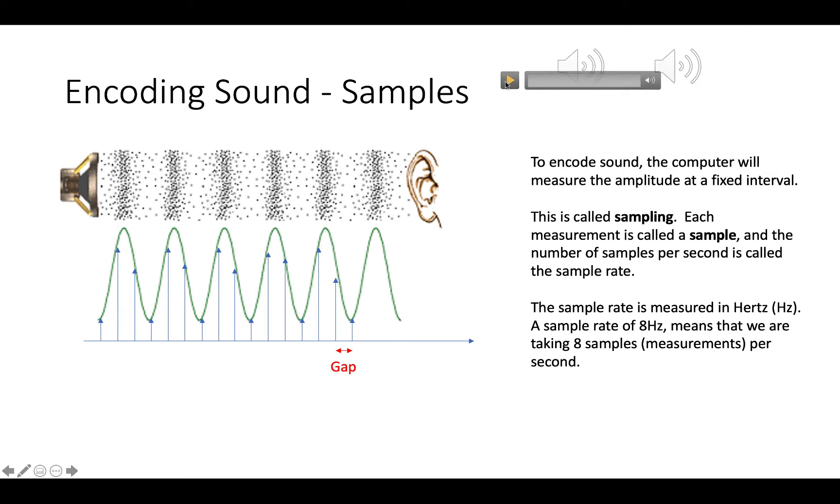So the way we're going to convert this analogue sound into a digital computer recording is we are going to take measurements at fixed intervals. At every fixed interval, we will measure the amplitude of that sound wave. And this is called sampling. Each measurement is called a sample, and the number of samples per second is called the sample rate. The sample rate is measured in hertz. So if you hear somebody saying 8 hertz, this means they're taking 8 samples per second.